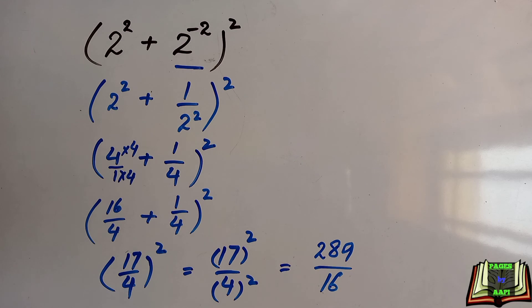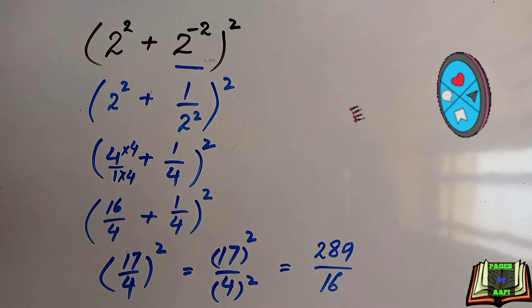The required solution is 289 by 16, or we can say this is the simplest form of this arithmetic operation. I hope you like this video and find this solution easy.